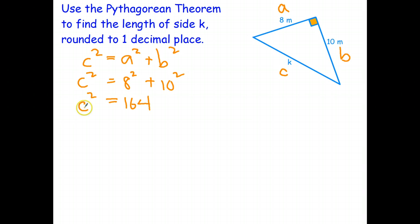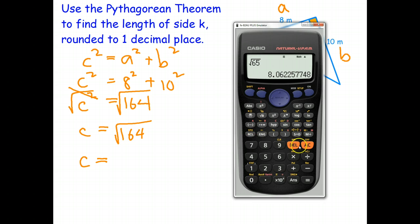I now have to get rid of the square by taking the square root of both sides. Square and square root cancel out. And there's my exact answer. Square root of 164. And I've got to round that to one decimal place. So I go grab my calculator.